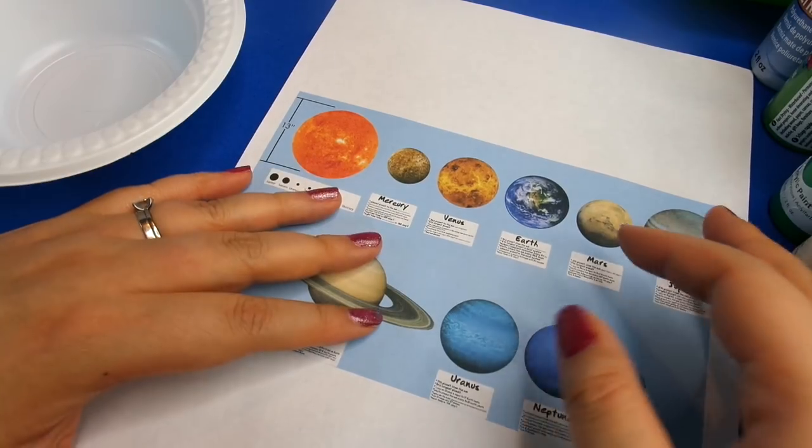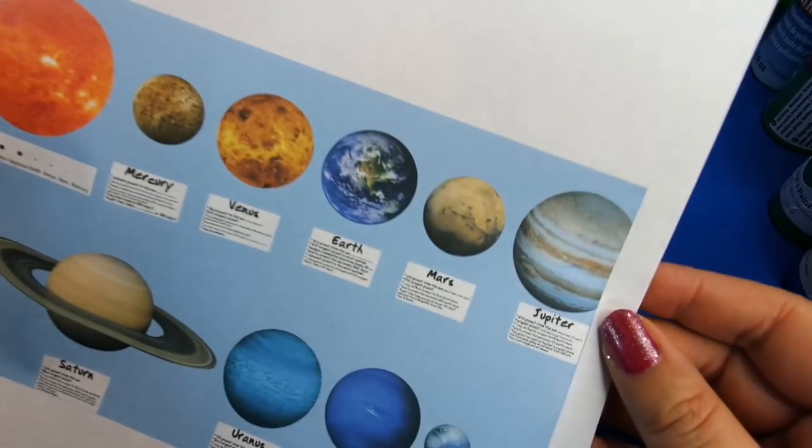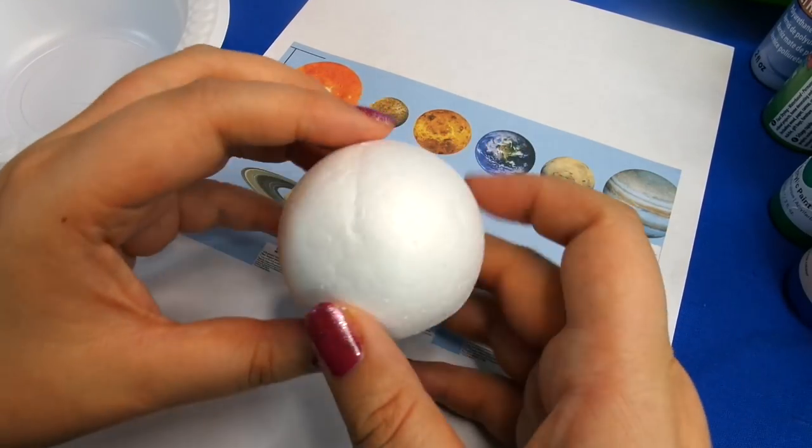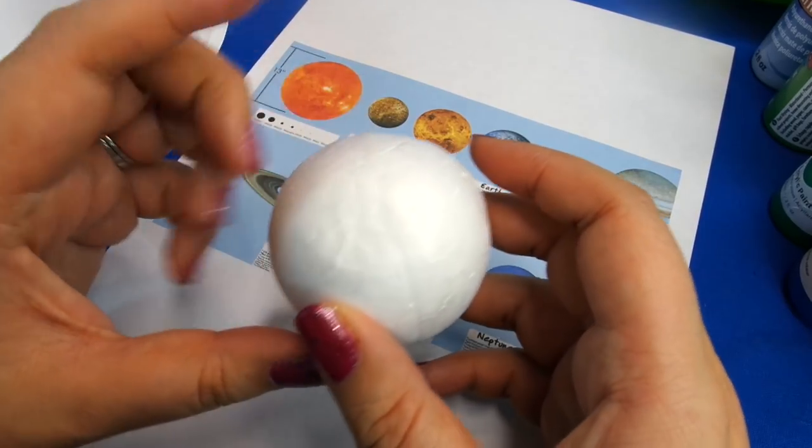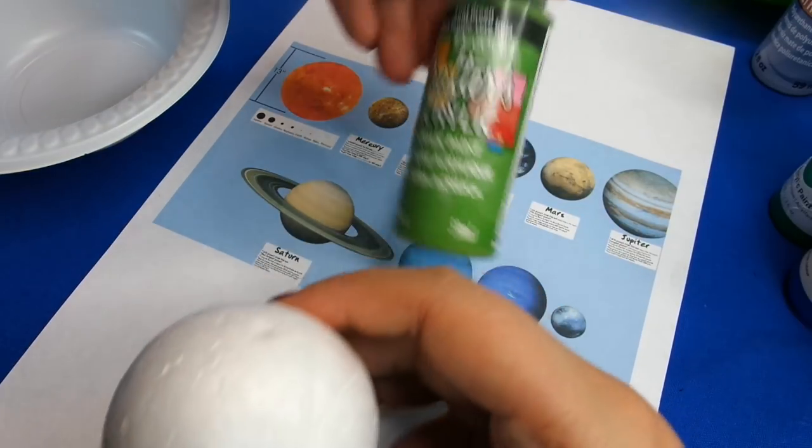Hi guys, today we are going to make a video that has been requested so many times. We're going to make Earth today and we're going to do it with these polystyrene balls. I think this is the six millimeter size one, so you need this and then you need a selection of paints.